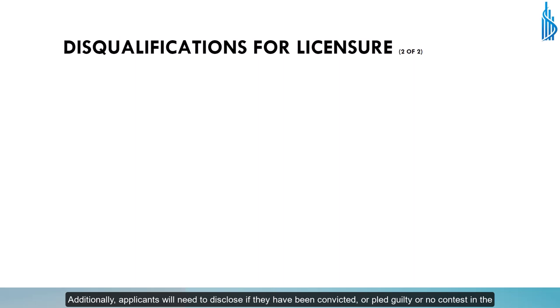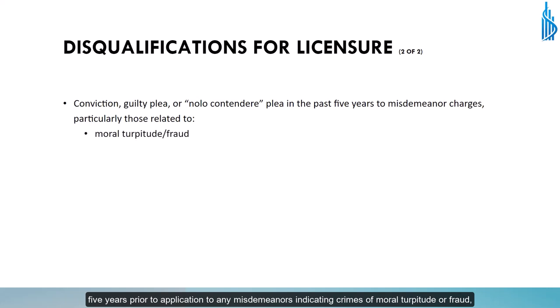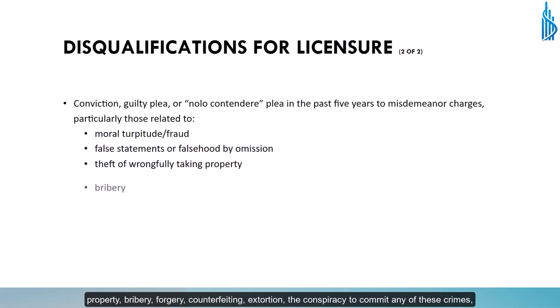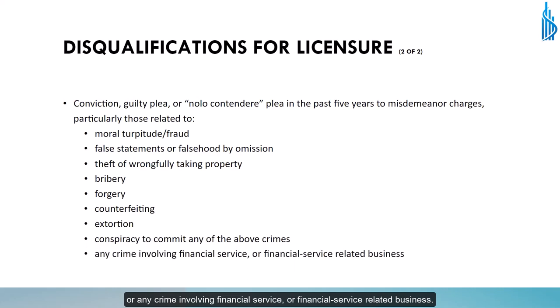Additionally, applicants will need to disclose if they have been convicted or pled guilty or no contest in the five years prior to application to any misdemeanors indicating crimes of moral turpitude or fraud, false statements or omission, theft, or wrongful taking of someone else's property, bribery, forgery, counterfeiting, extortion, the conspiracy to commit any of these crimes, or any crime involving financial service or financial service-related business.